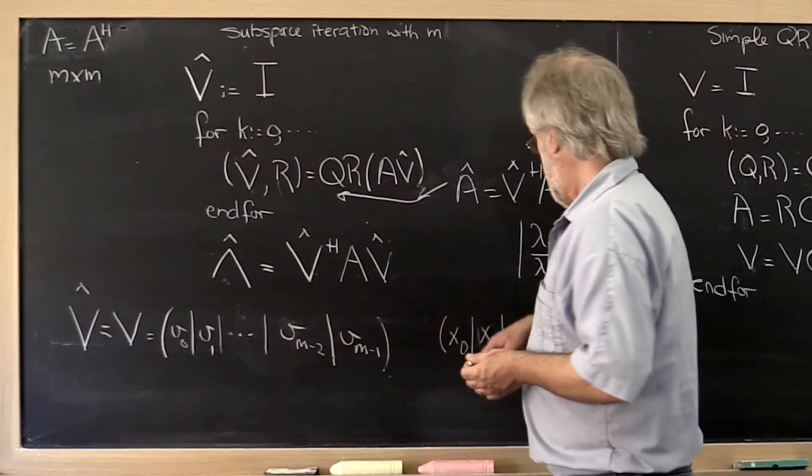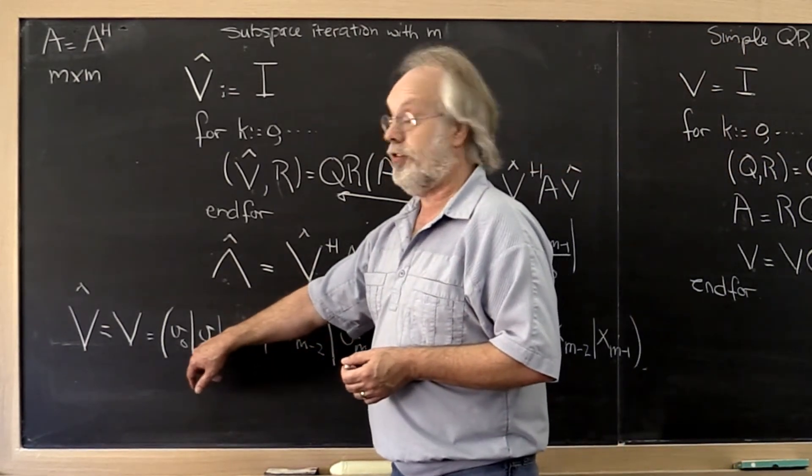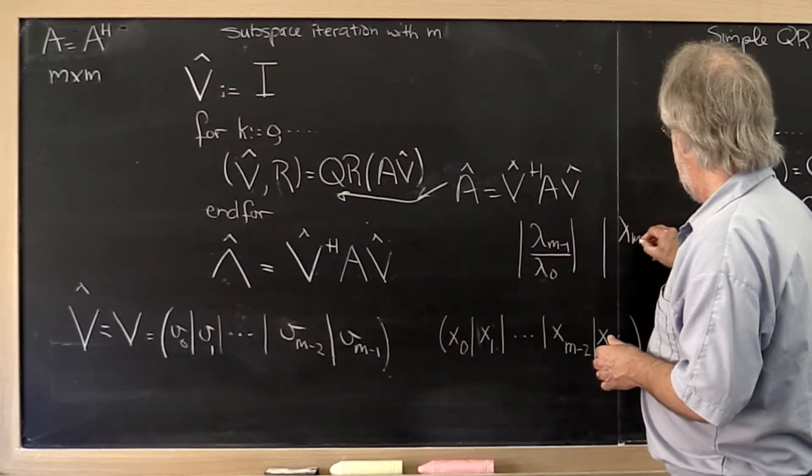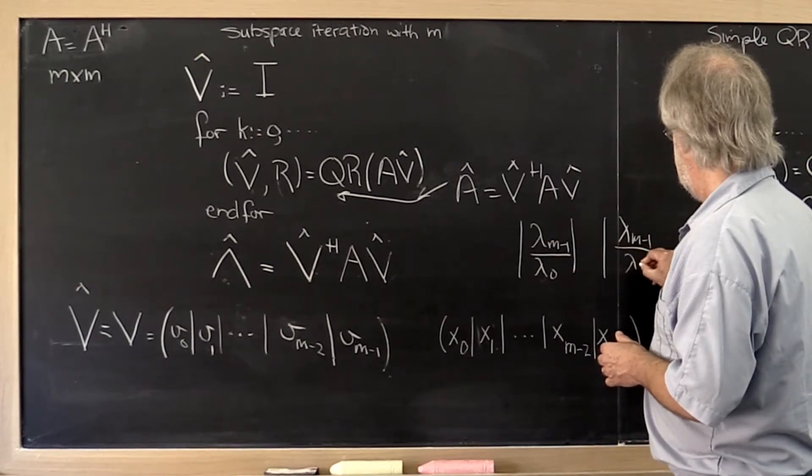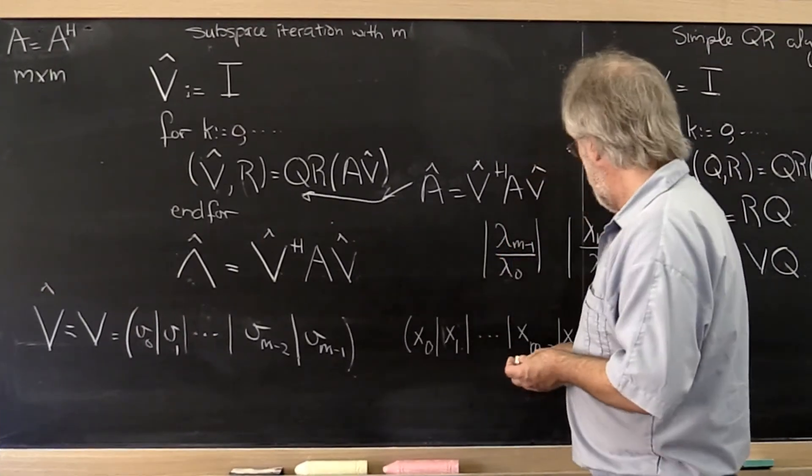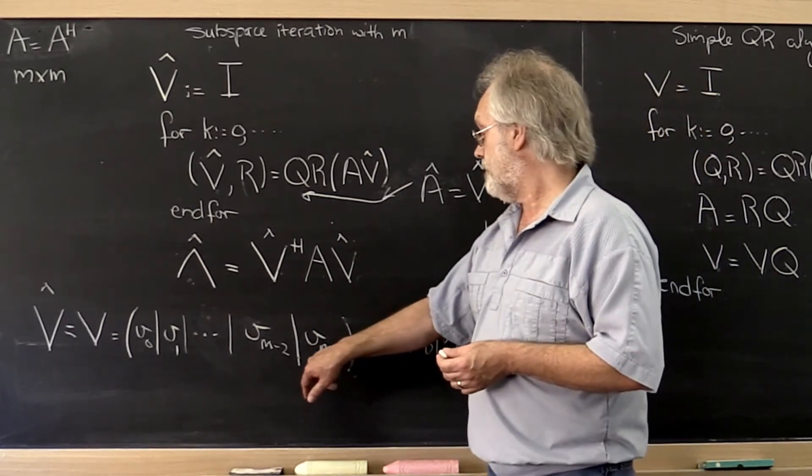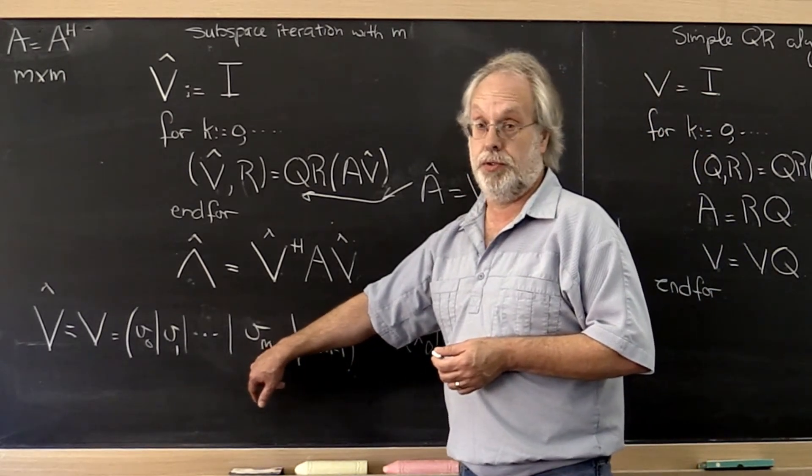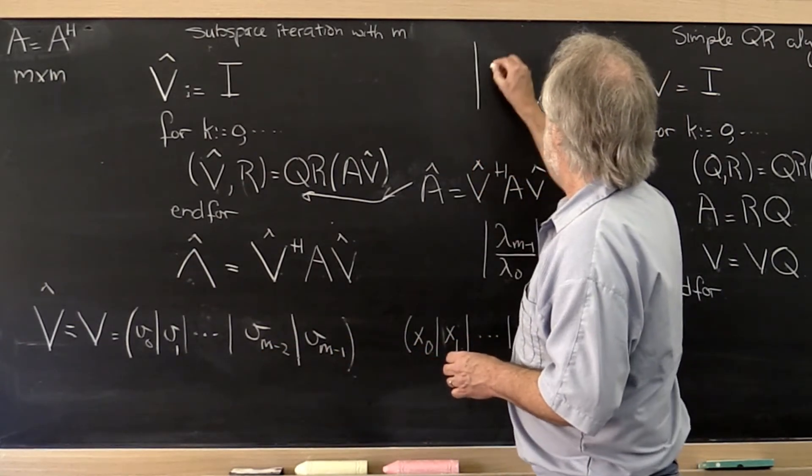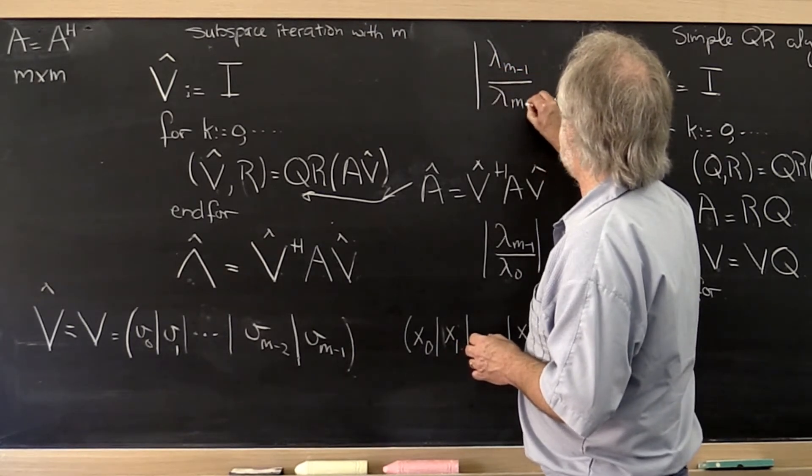How fast xm-1 disappears from the vector v1 is dictated by this ratio, lambda m-1 over lambda 1 and so forth. Importantly, if you ask the question of how fast the component in the direction of xm-1 disappears from the vector vm-2, that is dictated by this coefficient, lambda m-1 divided by lambda m-2.